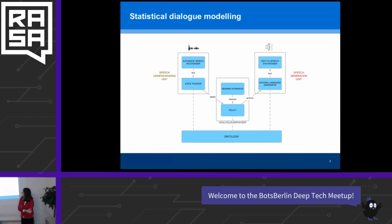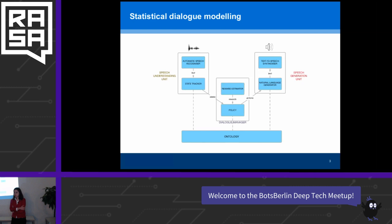Now back to diagrams. What is a spoken dialogue system? It consists of three main units: the first is the understanding of the user input, the second is the dialogue management unit which decides what to say back to the user, and the third is the generation unit which converts the system output into language and speech. Underlying these is the knowledge with which a dialogue system operates.